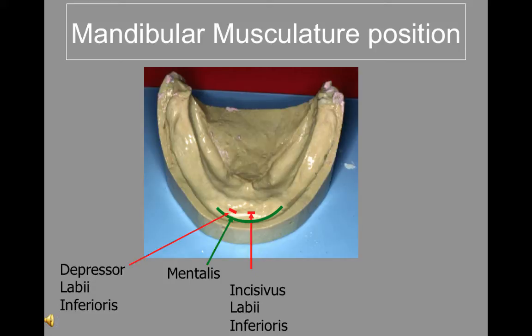The mental foramen is an opening in the mandible in the area between the two premolars. It is where the mental nerve exits the mandible and enters the tissues, giving innervation to the lip. When a person has a large-sized ridge, the nerve is usually buckled to the alveolar ridge. But when extreme resorption has taken place, the mental foramen may be on the crest of the ridge as shown on this arch.